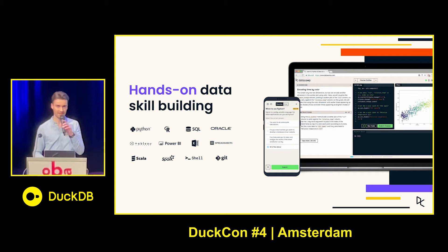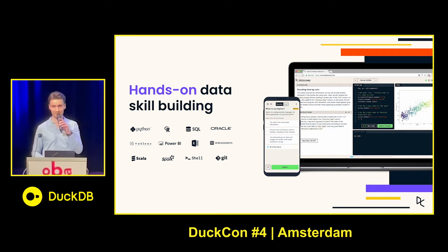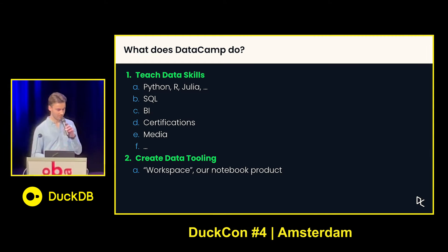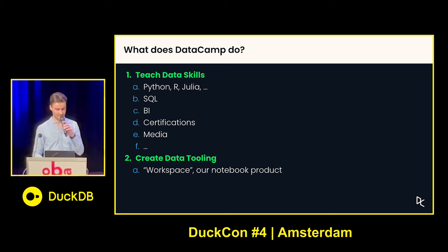If you don't know Datacamp, we are mostly known as a platform for data skill building — mostly known for our R and Python courses, but we also teach people other things like Scala, Spark Shell, and even Git for version control. We are mostly known for the first part, teaching people data skills, but we also have a secret second part where we create data tooling called Workspace, our notebook project.